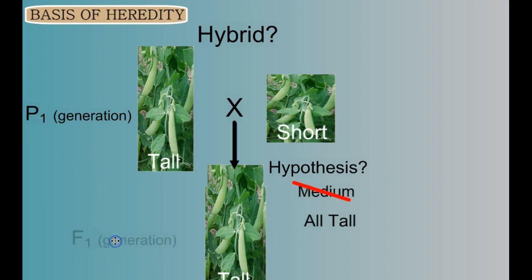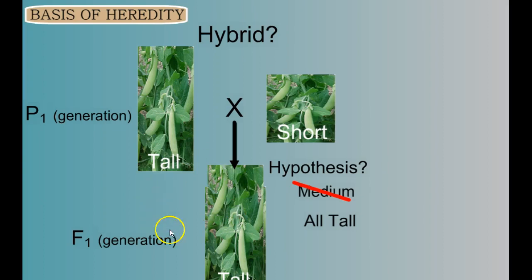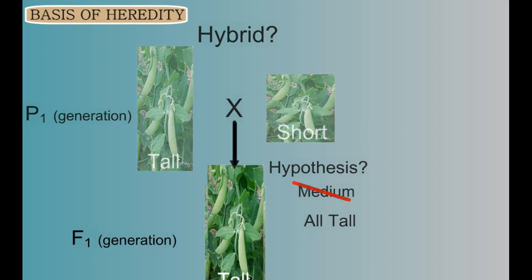We call these plants the F1 generation. It was as if the shortness version of the trait was gone. But here's the interesting thing — what happens if he takes two of these tall offspring plants, two of these F1 generation hybrids, and crosses them with each other?